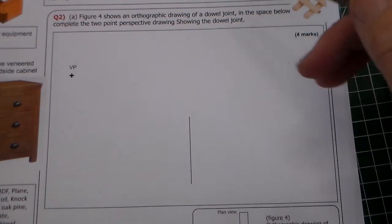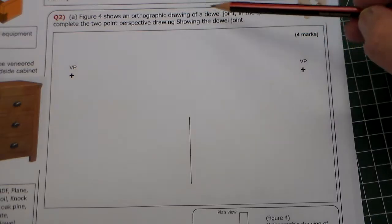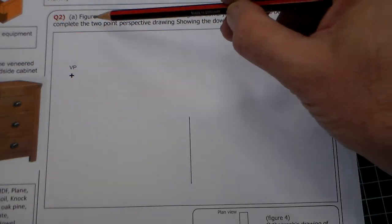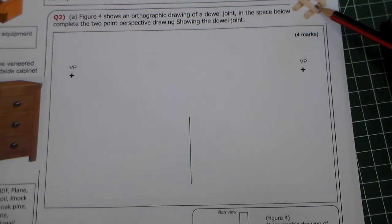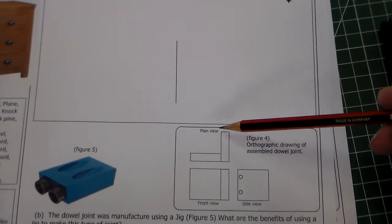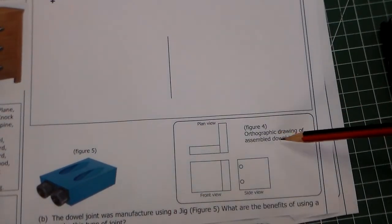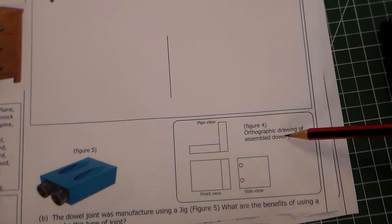So the question here says figure four shows an orthographic drawing of a dowel joint. In the space below complete the two point perspective drawing of the dowel joint. And there's a little picture there of a dowel and if we move down to here we can see here is the orthographic drawing of the assembled dowel joint.